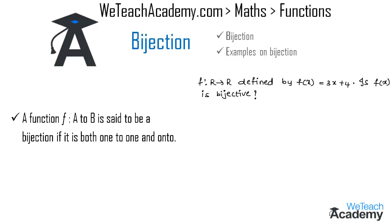Here we have an example: if f is a function from R to R defined by f(x) = 3x + 4, then we have to state whether f(x) is bijective or not. If f(x) is bijective then it must satisfy the conditions of both one-to-one and onto.